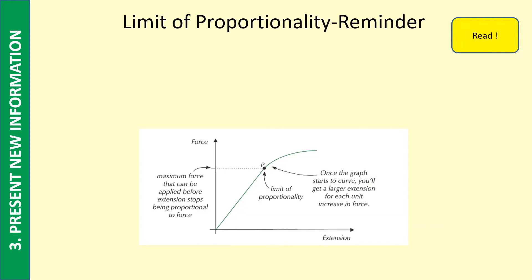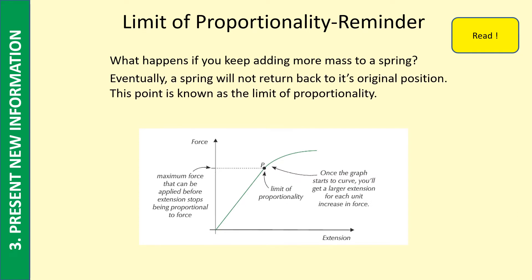This is just a reminder about what we discussed about the limit of proportionality. Remember, up to a certain point, the extension that you get is proportional to the force. That's the straight part of the graph there. Once you get to that point P, the spring is no longer going to return to its original length if you take away the force. So basically, you've ruined it. But that point there is called the limit of proportionality.